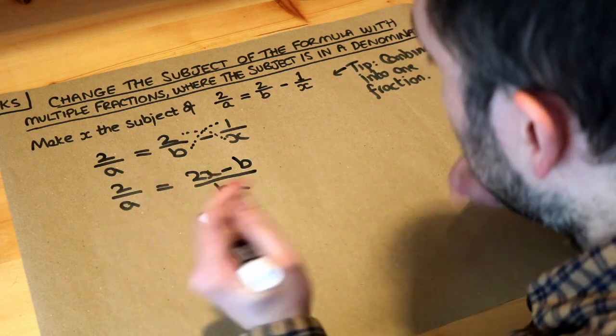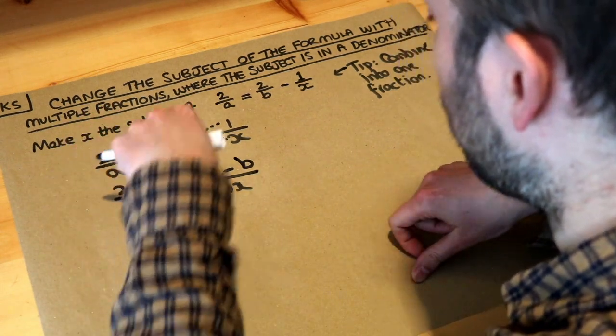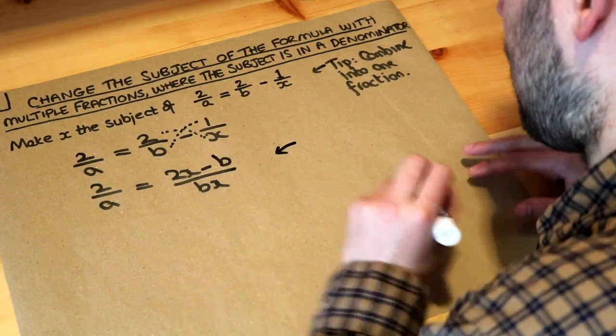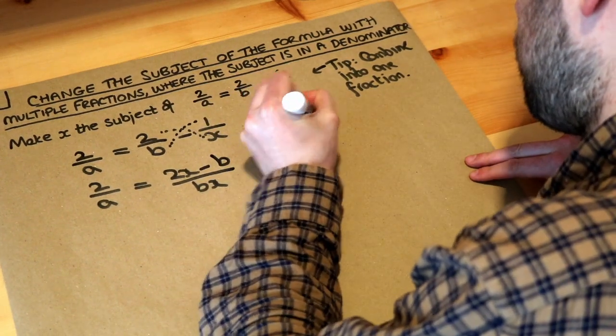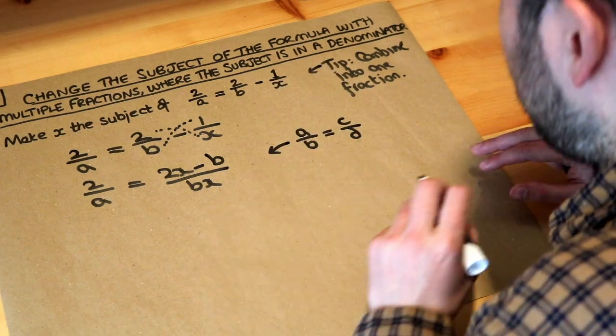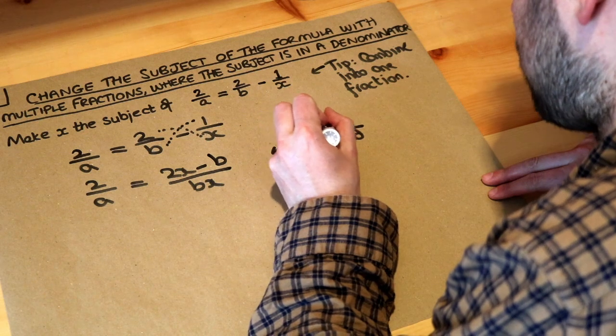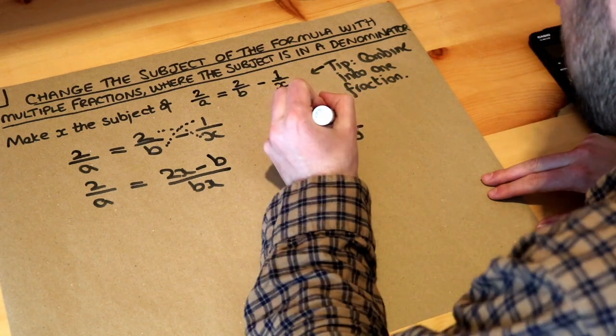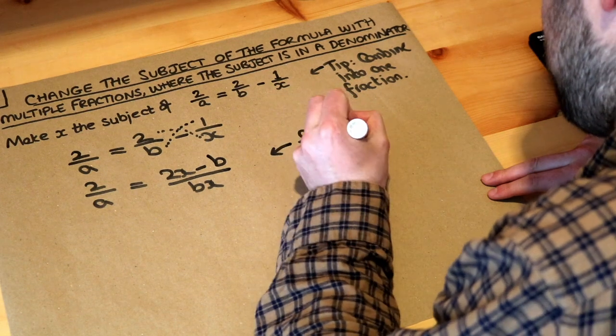Now it's a bit simpler because we've just got fraction equals just a single fraction here. Now if that happens where you have a over b is equal to c over d, we cover that in another video and what you do is you again cross multiply. So you do the a times the d, so a times the d is equal to c times the b, so bc.